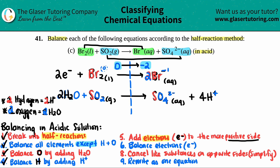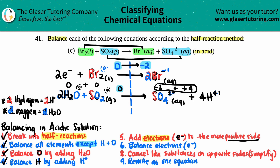For the bottom half reaction: H₂O and SO₂ have no charges — both are zero — so the overall left-side charge is zero. On the right side, SO₄²⁻ contributes −2, and there are four H⁺ each contributing +1, giving +4. Adding −2 and +4 gives an overall charge of +2 on the right side.